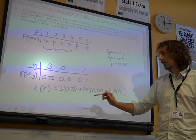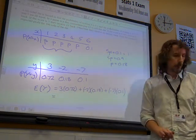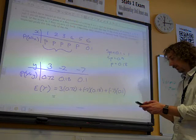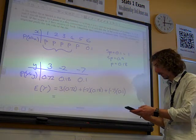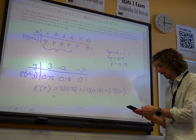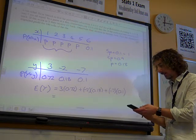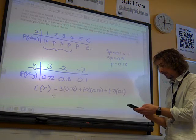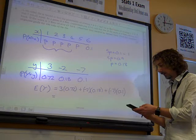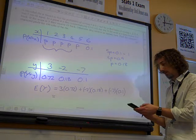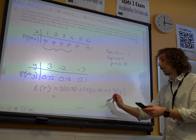that's 3 times 0.72 plus minus 2 times 0.18 plus minus 7 times 0.1. Remember how we find the expectation of a discrete random variable. And if we work them out, this is going to give us 1.1.